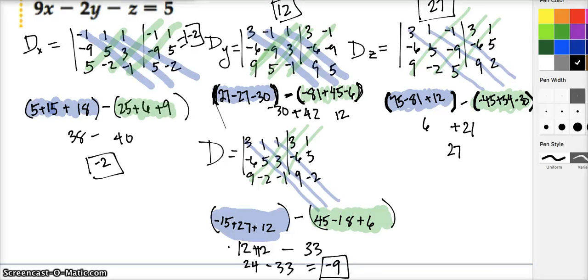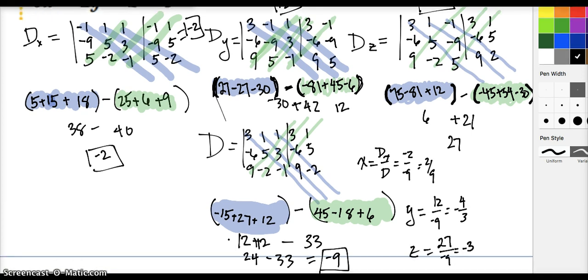Positive 9 minus 30 is negative 21. Negative 21 minus, so I'm doing minus a minus 21, it's really plus 21. So I end up with 27 here. 27 is the value of this determinant. Doing the same diagonal calculations up and down, I got that this determinant's value is negative 9. We're about to bring it home.